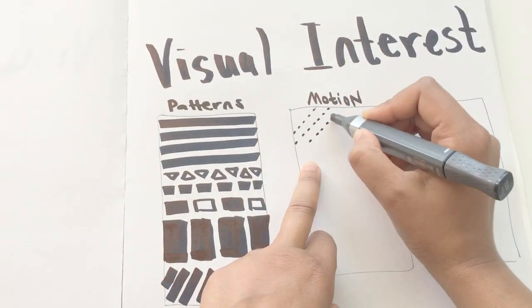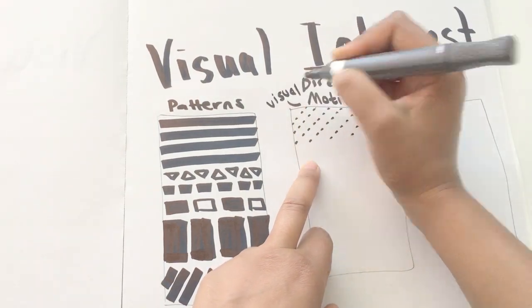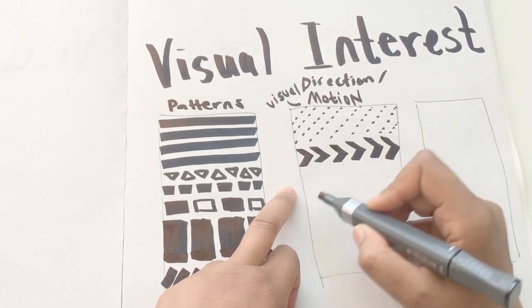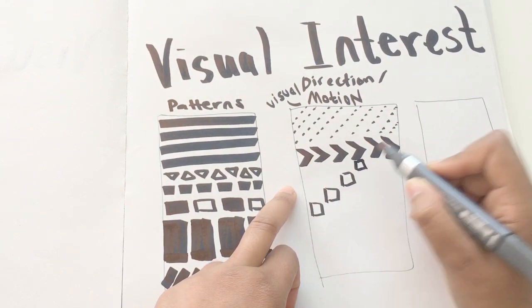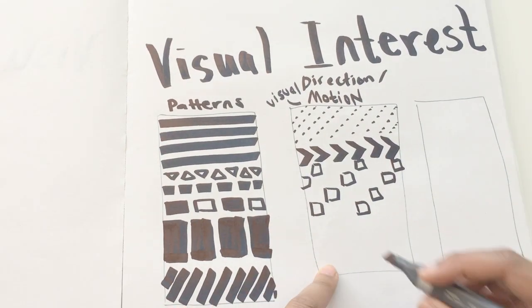The second way here is by using motion. Now, it's difficult to create motion on a 2D form. However, when you're building a composition, you can move the eyes of the viewer with patterns or using shapes or colors to help guide the eye of the viewer.